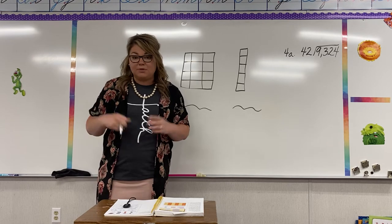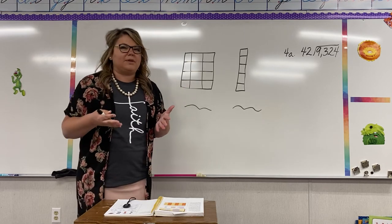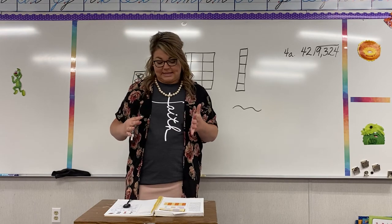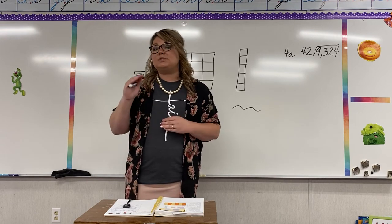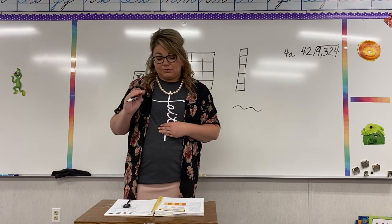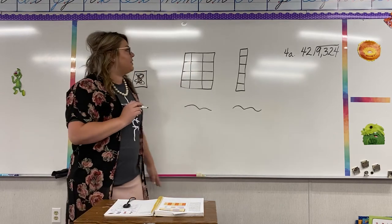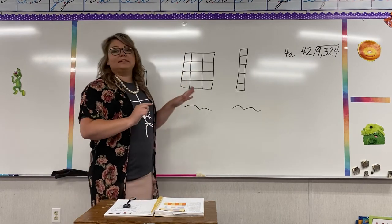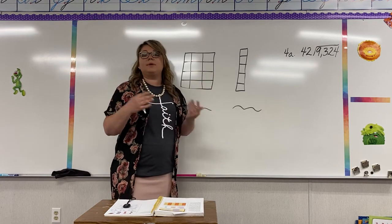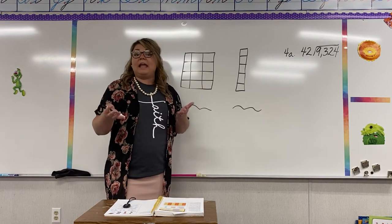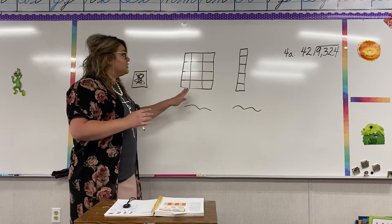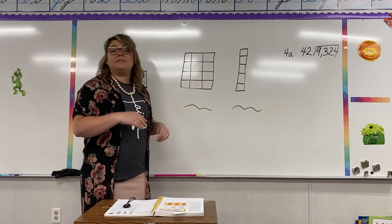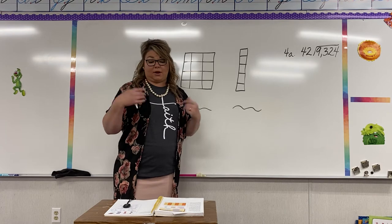Today we're just going to get our feet wet with area. We're going to talk about how to find it by dividing it into square units. You will see on your page, on number one and number two, it kind of looks a little bit like this. One way to find the area is just to divide it into square units — which has already been done for you — and then just count up the square units.